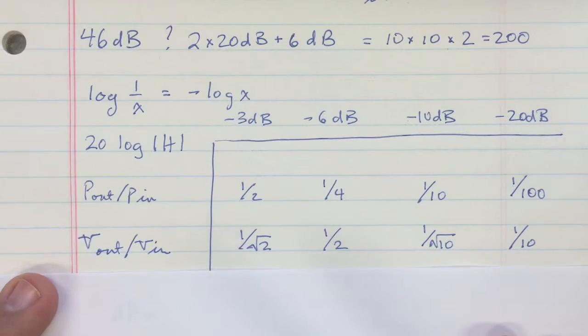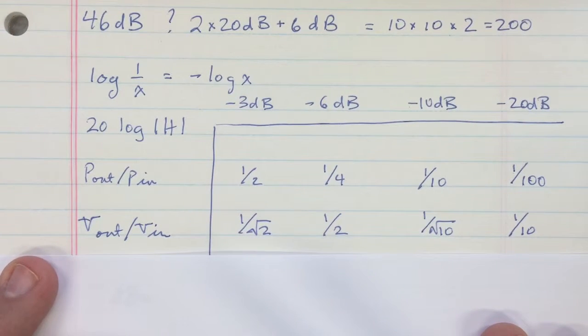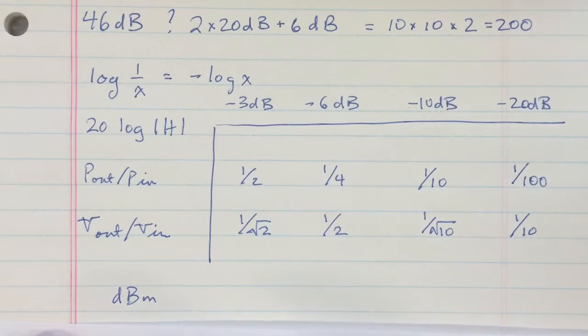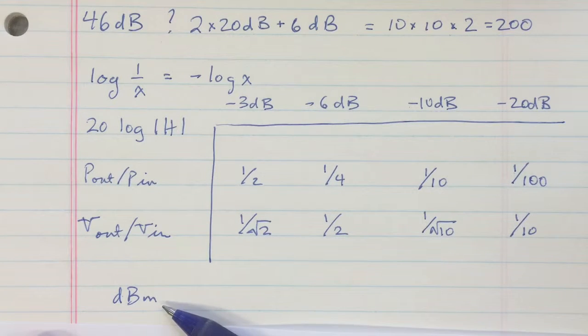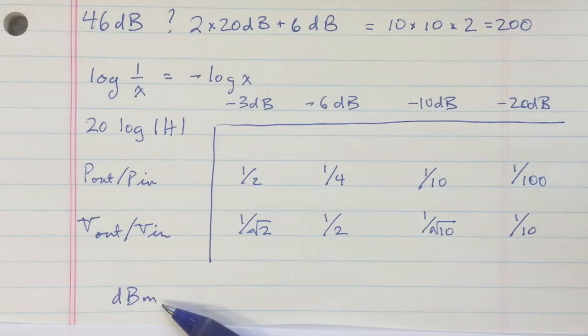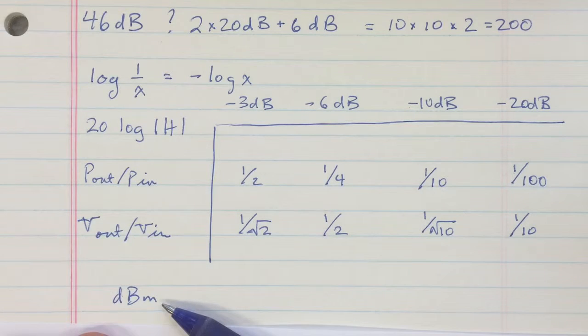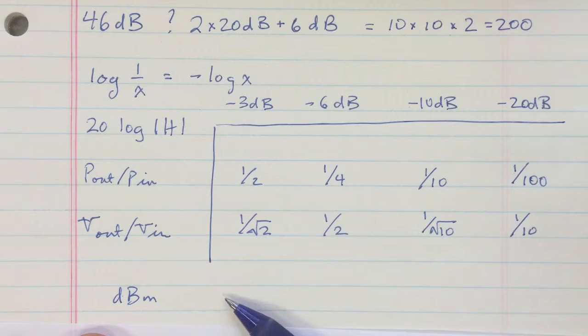There's also other types of decibels that come out sometimes. So sometimes people will reference the decibel value to an absolute input, like, say, a power of one milliwatt, in which case you get dBm. There's many other kinds of dBs, like dBV and other things. Let's not worry about those.